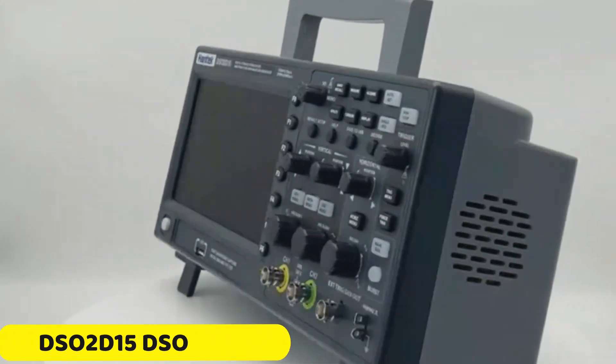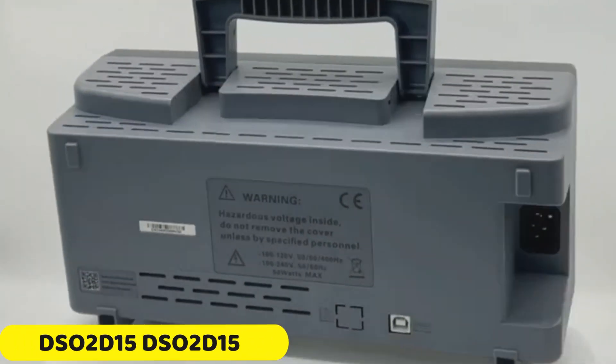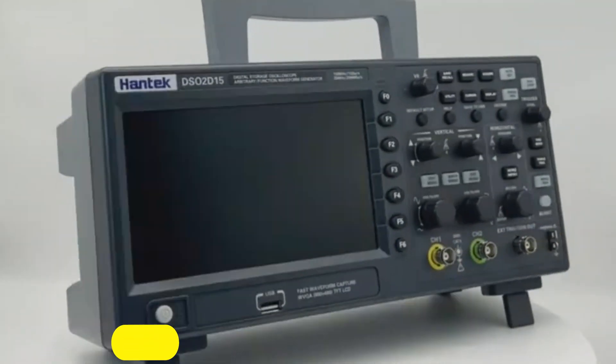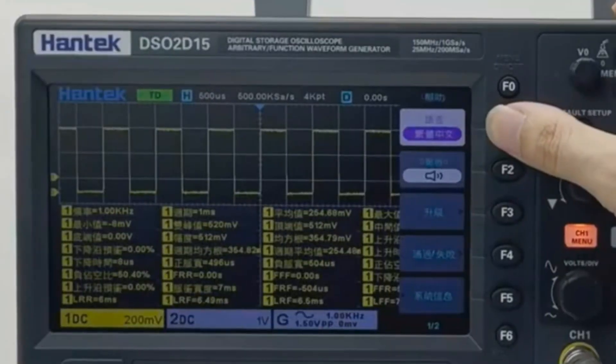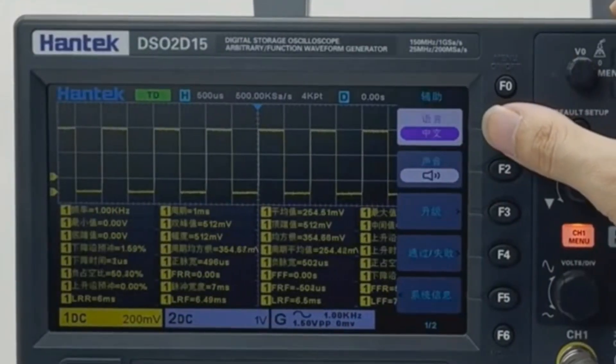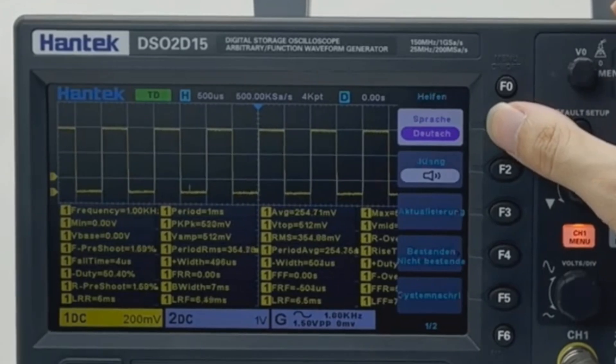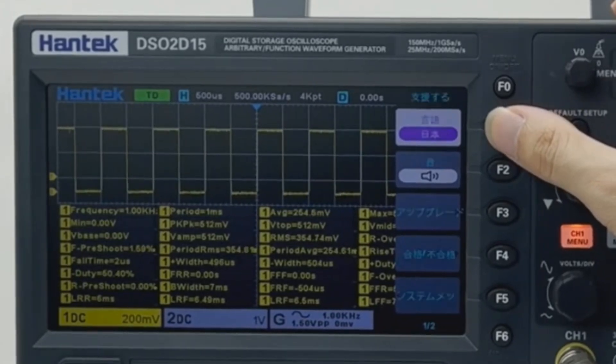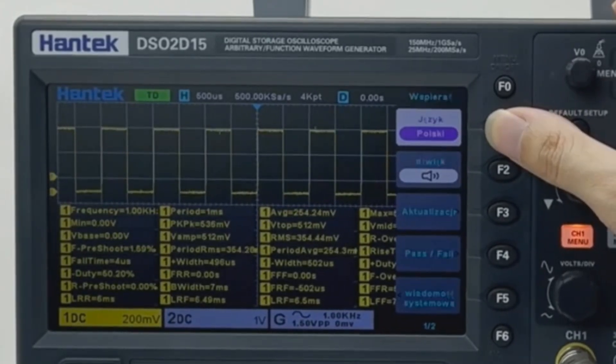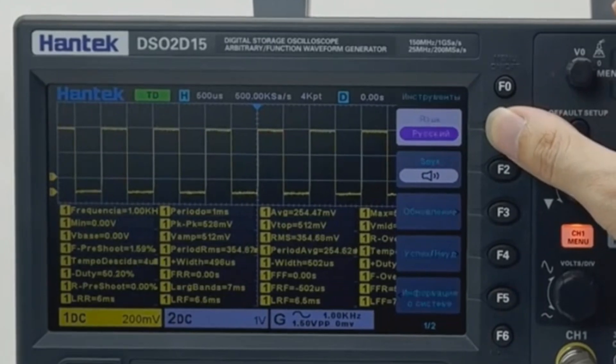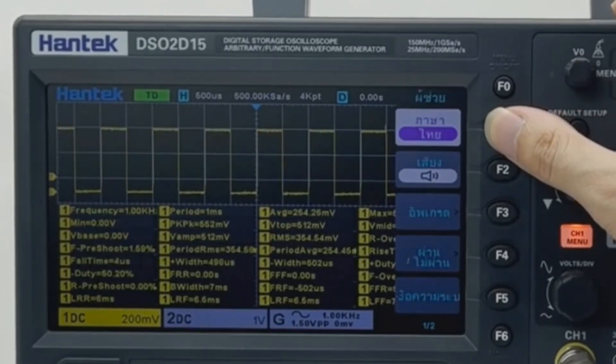Number 4: Hantec DSO2-D15 Signal Generator. The Hantec DSO2-D15 Signal Generator is a powerful tool for electronic testing and measurement, boasting an impressive 8 million points of record length. Its user-friendly interface and robust design make it an ideal choice for professionals and enthusiasts.